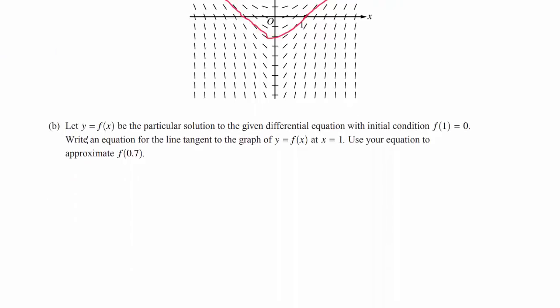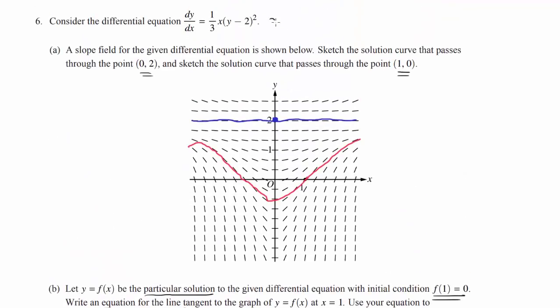Let's go on to part B. Let y = f(x) be the particular solution to the given differential equation with the initial condition f(1) = 0. So they are giving us the point (1,0). Write an equation for the line tangent to the graph of y = f(x) at x = 1. Use your equation to approximate f(0.7). Well, if you want to find the equation of the line, we need a point and the slope. And how do you find slope? Using the equation.